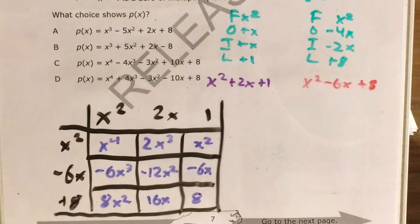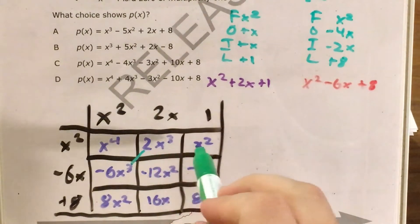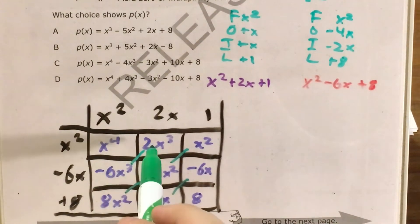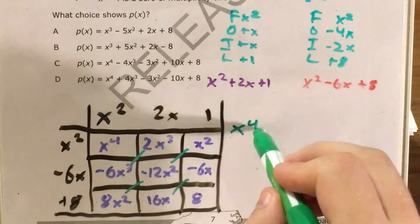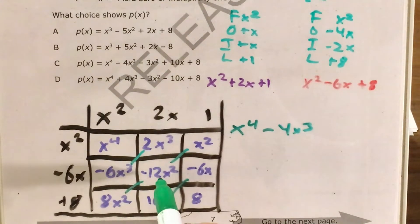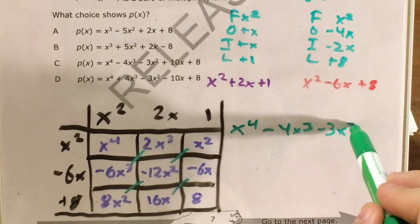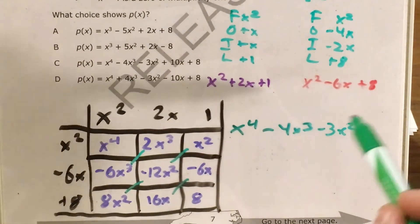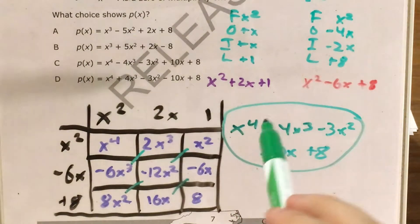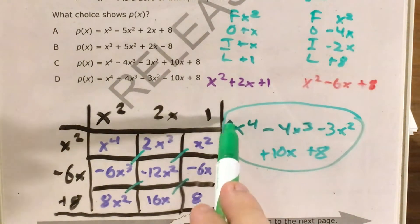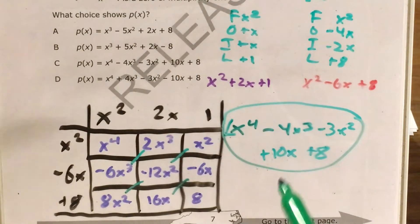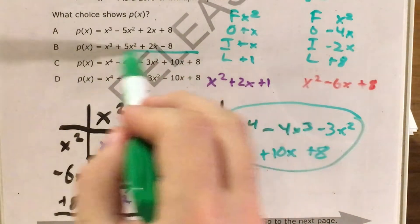Now, by combining like terms, I can use a shortcut and see that all my x cubed, x squareds, and x's are along diagonals. So starting with x to the fourth, then negative 6x cubed plus 2x cubed gives me minus 4x cubed. Then 1x squared plus 8x squared minus 12x squared gives me minus 3x squared. Negative 6x plus 16x gives me plus 10x. And 8 just becomes plus 8. So my polynomial is x to the fourth minus 4x cubed minus 3x squared plus 10x plus 8. My lead coefficient is 1, which checks out. The answer is choice C.